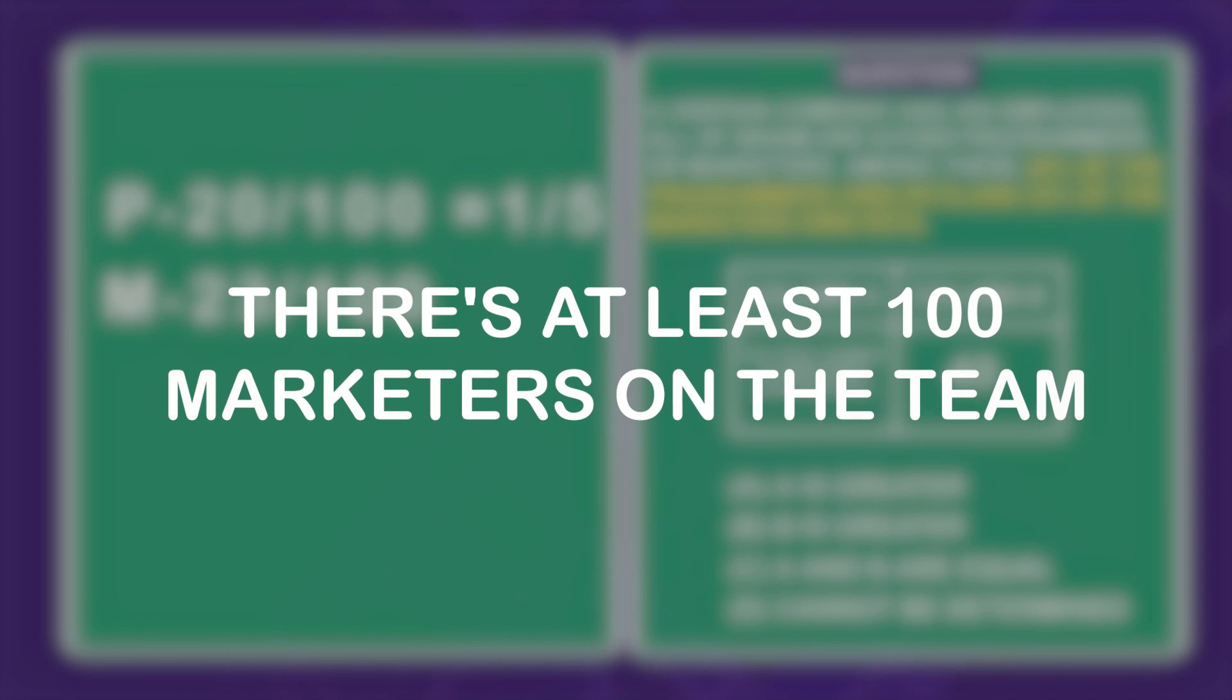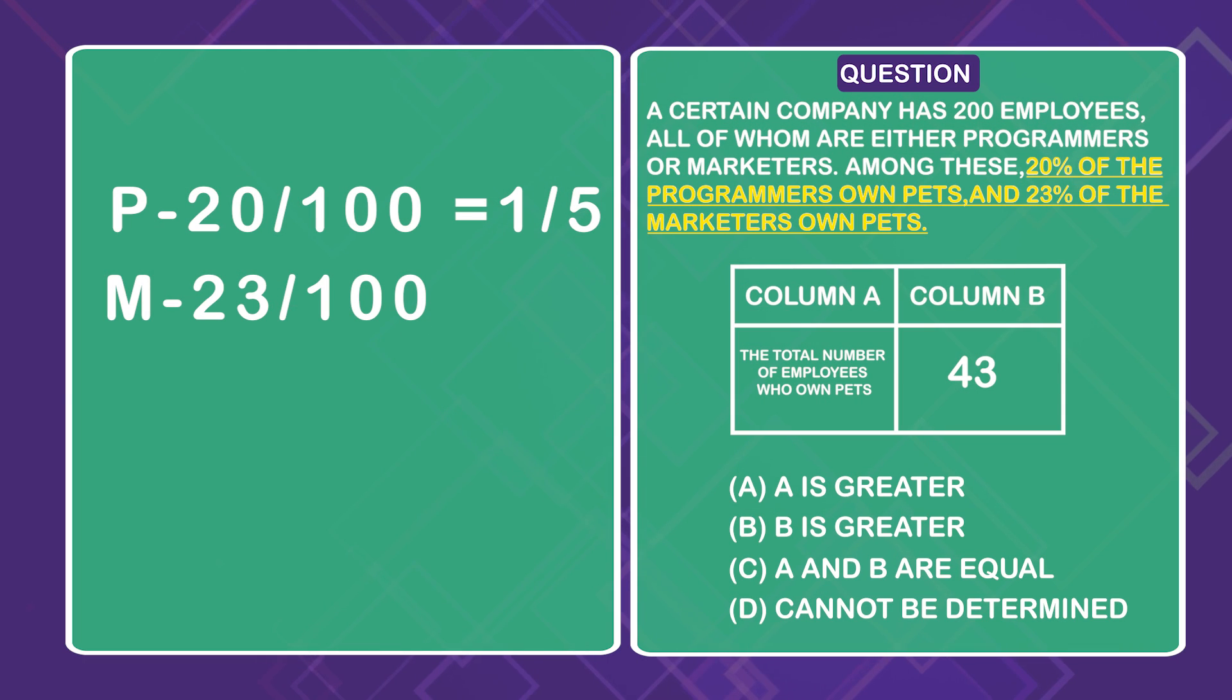In other words, there's at least 100 marketers on the team. That is because we can't have a fraction of a person.